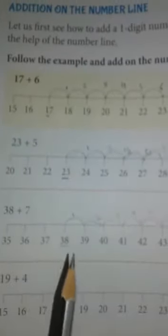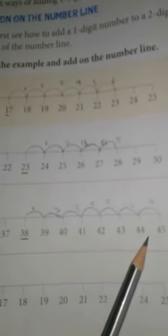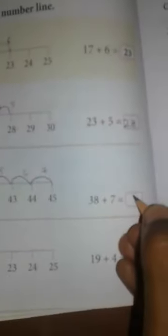44 to 45 is 7. So student, in the 38, we added 7 more numbers. You can see here. It becomes 45. 38 plus 39, 40, 41, 42, 43, 44 and 45. So student, 38 plus 7 is 45.